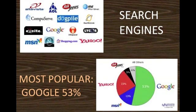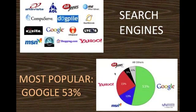For your day-to-day research, you use search engines. These are programs that search databases, gather and report information that contains your search keywords. You can see many different search engines listed, and a pie chart indicates that Google is the most popular search engine today.